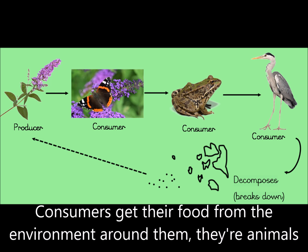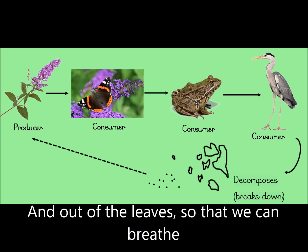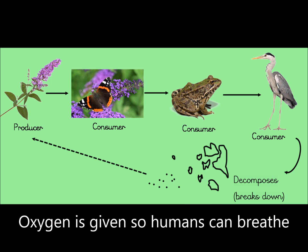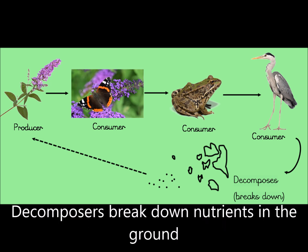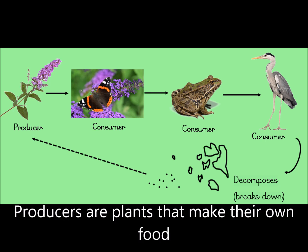Oxygen is given out of the leaves so that we can breathe, so humans can breathe. And the decomposers break down nutrients in the ground.